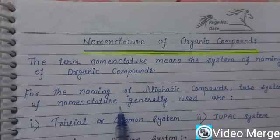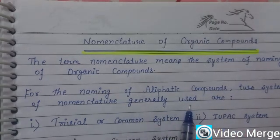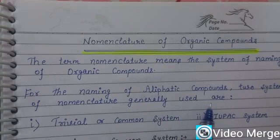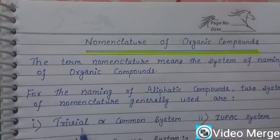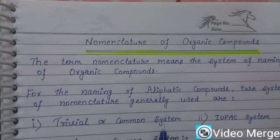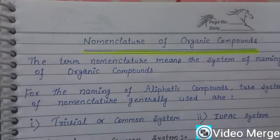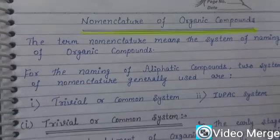Generally, there are two systems of nomenclature used for the naming of organic compounds. The first one is the trivial or common system, and the second one is the IUPAC system.